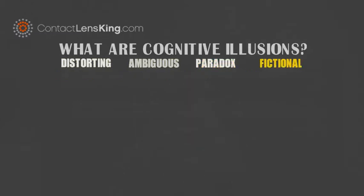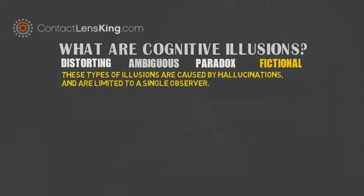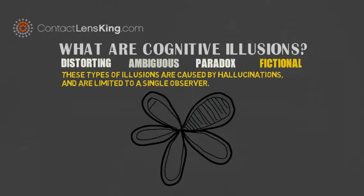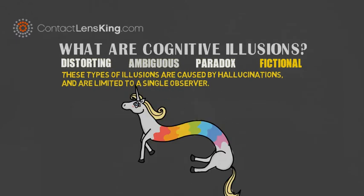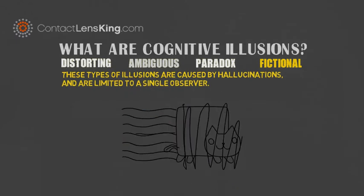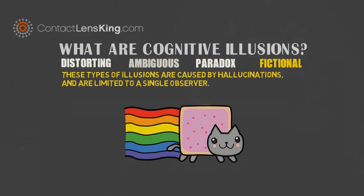The final category for cognitive illusions are fictional illusions. These types of illusions are caused by hallucinations and are limited to a single observer only.